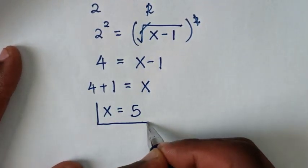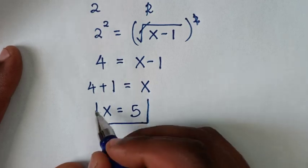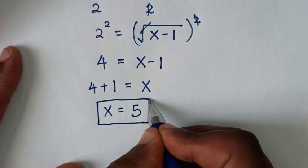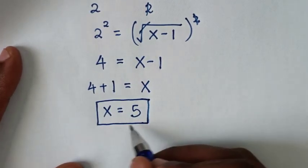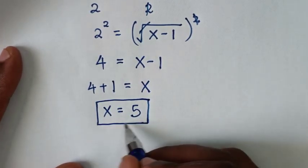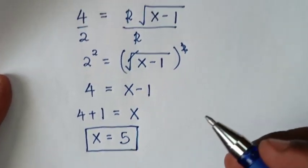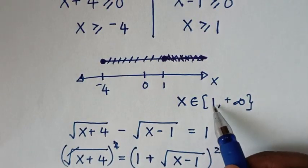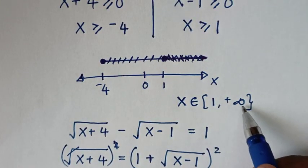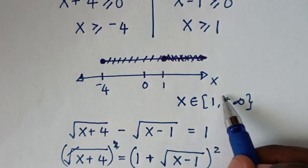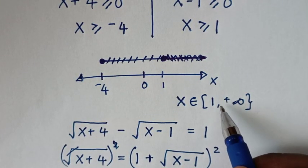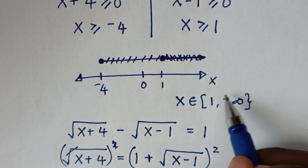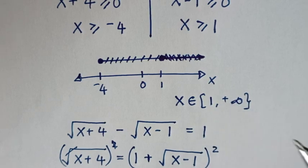This is the final answer for the value of x in this problem: x equals 5. From the number line, x is between 1 and infinity, and 5 is between 1 and infinity, so it is a valid positive value.